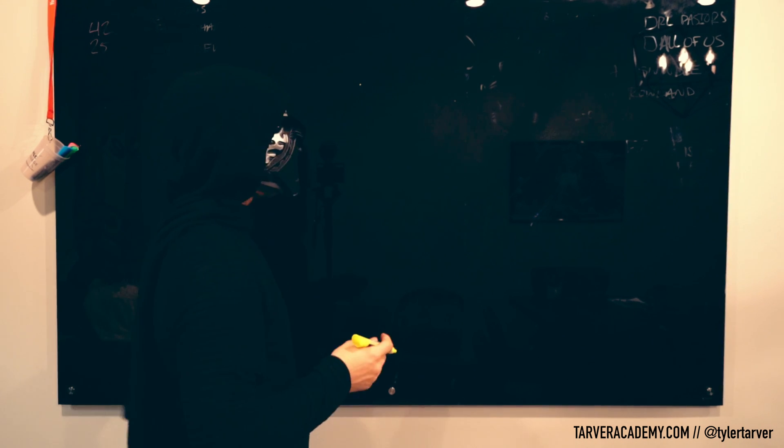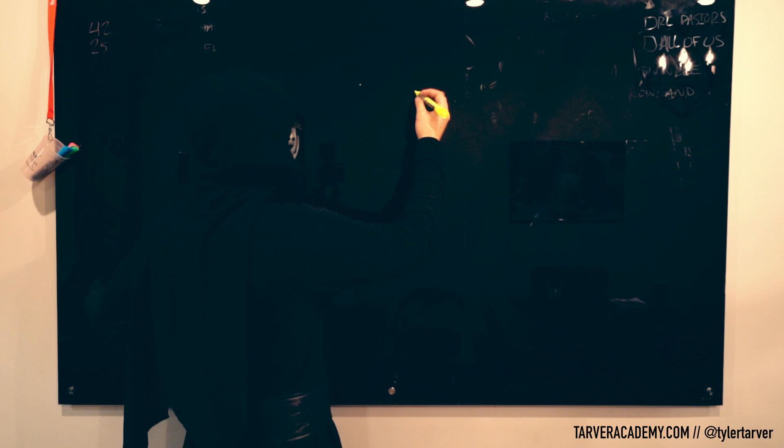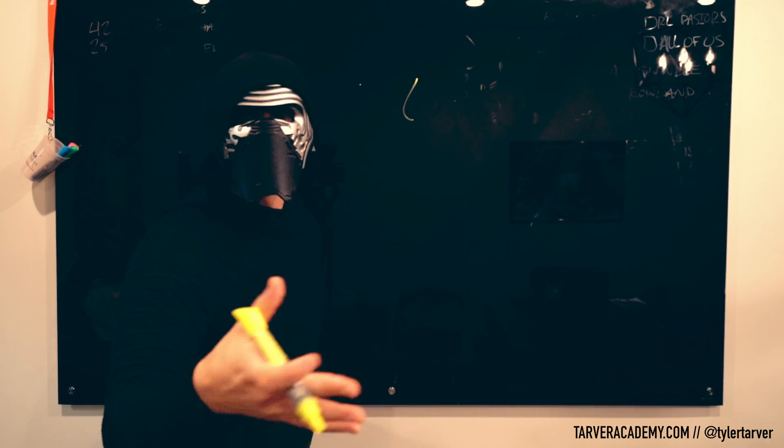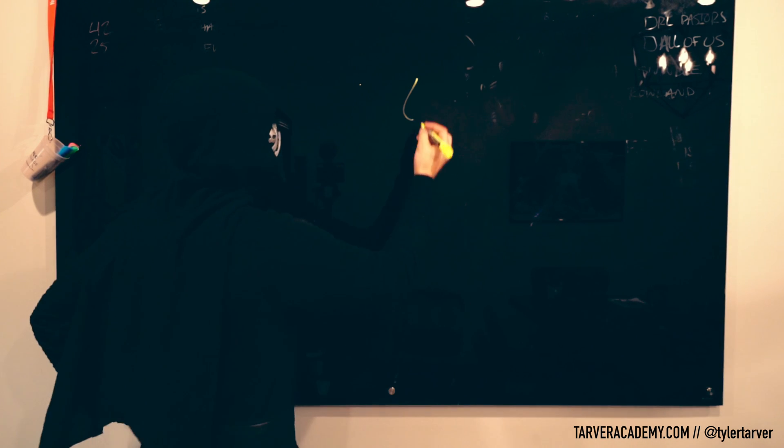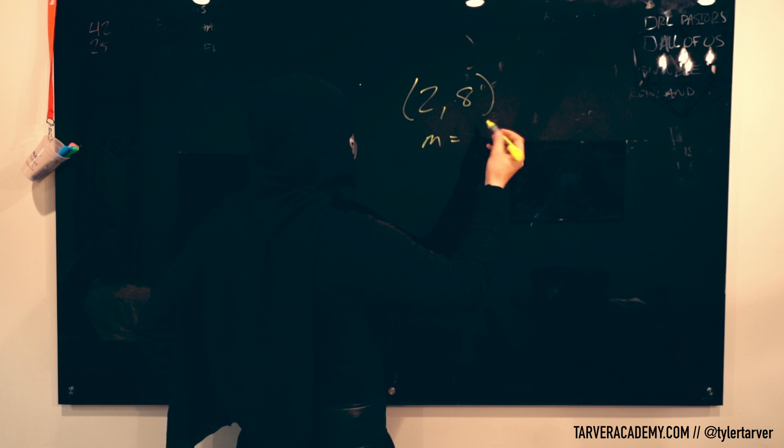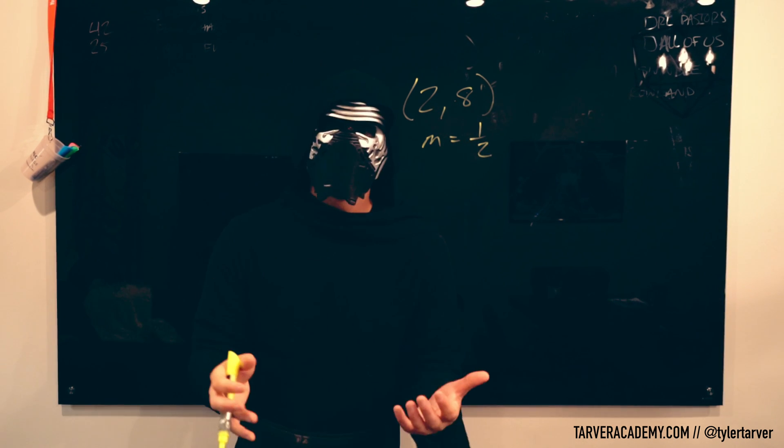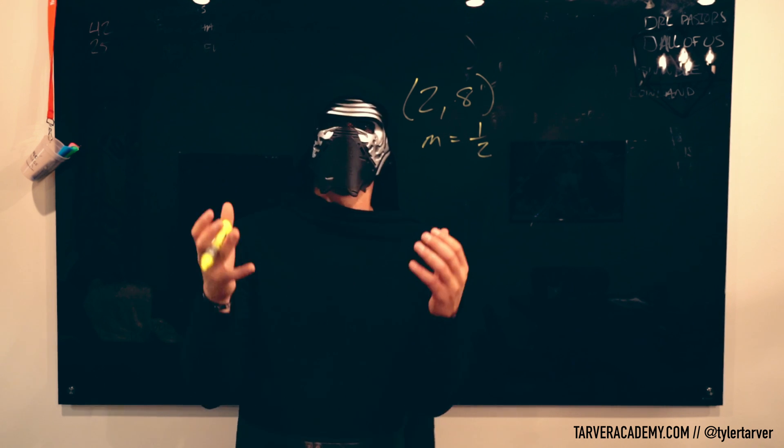Let's say you have a coordinate and you want to know the slope of a line. Let's say you want to put it in slope-intercept form. This is a common question. Put in slope-intercept form a line that goes through (2, 8) and has a slope of one half.